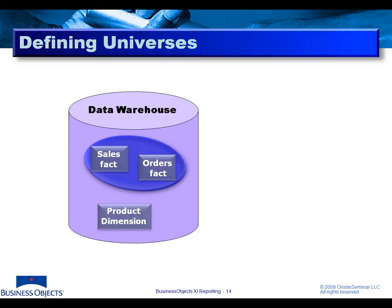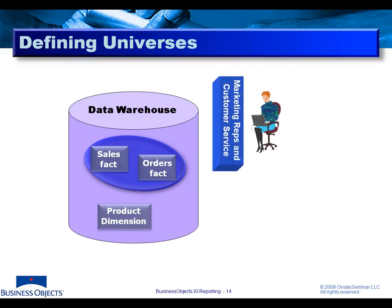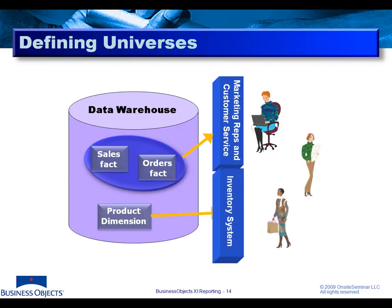A warehouse is a combination of dimension tables and fact tables. Different people and different entities in our organization are interested in different portions of these systems and what kind of data they can provide. In our user community, as they're looking at the warehouse, they're either looking at dimensional data, looking at fact information,